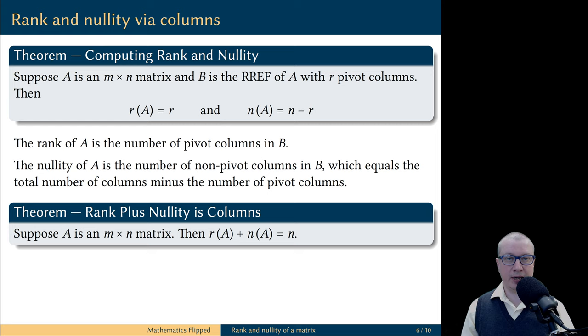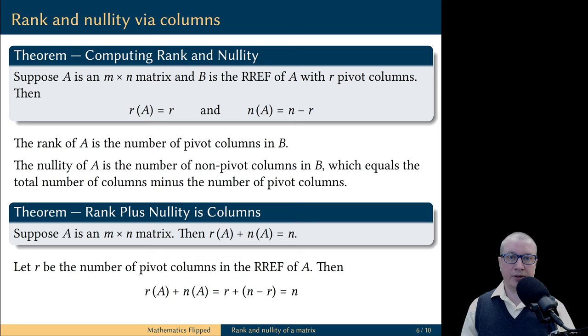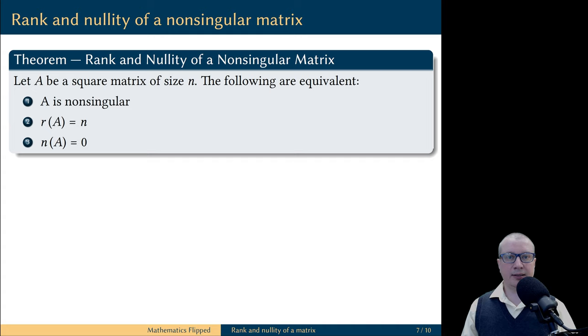Because the rank of the matrix is the number of pivot columns and the nullity of the matrix is the number of non-pivot columns, the number of pivot columns plus the number of non-pivot columns gives you the number of total columns. It should not be surprising for you by now that the notions of rank and nullity have strong connections to the notion of a non-singular matrix.